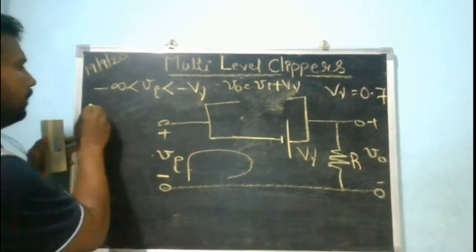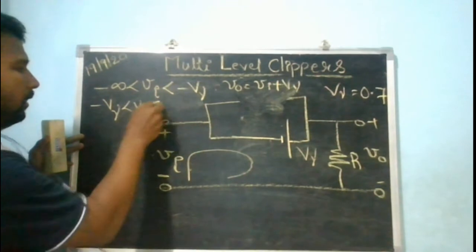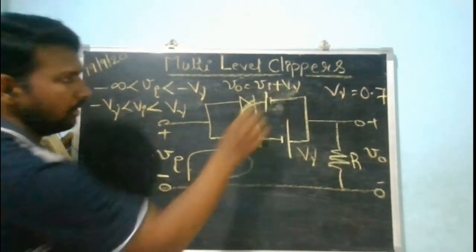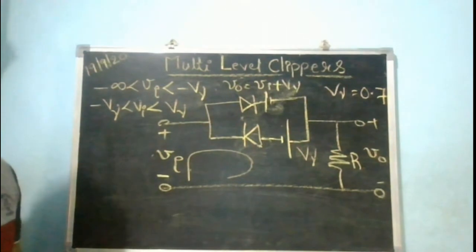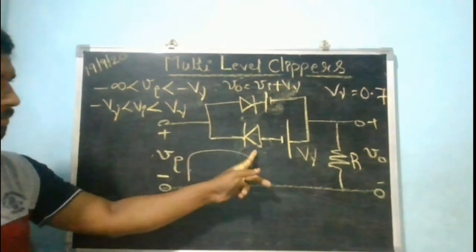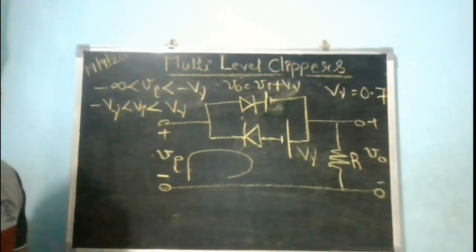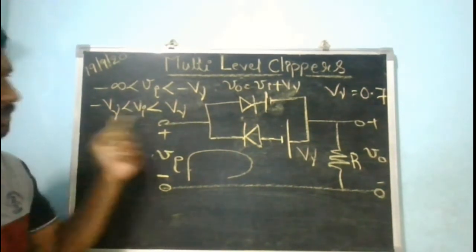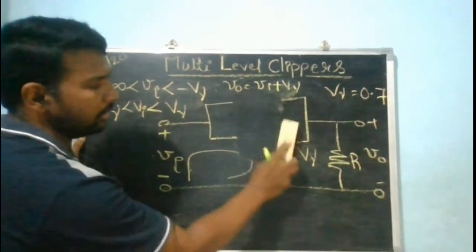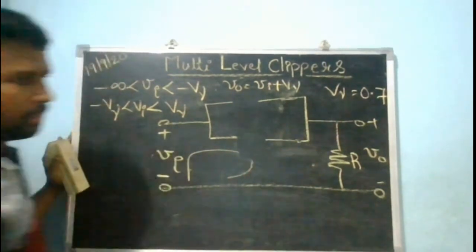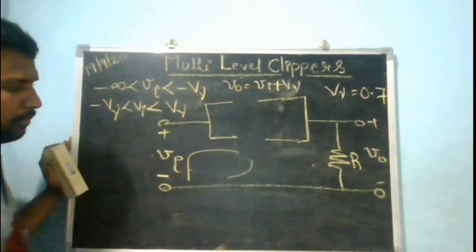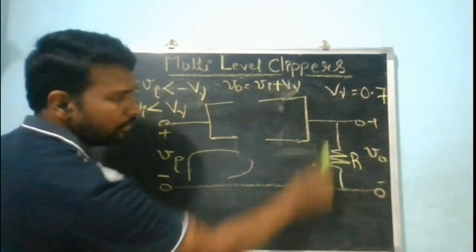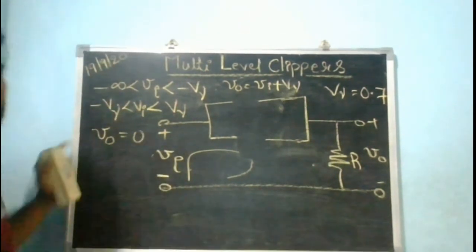The next interval is minus V gamma to plus V gamma. Within this range, since VI is less than V gamma, D1 is off; since VI is greater than minus V gamma, D2 is also off. With both diodes off, no current flows through R, so V naught equals zero. In this middle interval from minus 0.7 to plus 0.7, the output is zero.